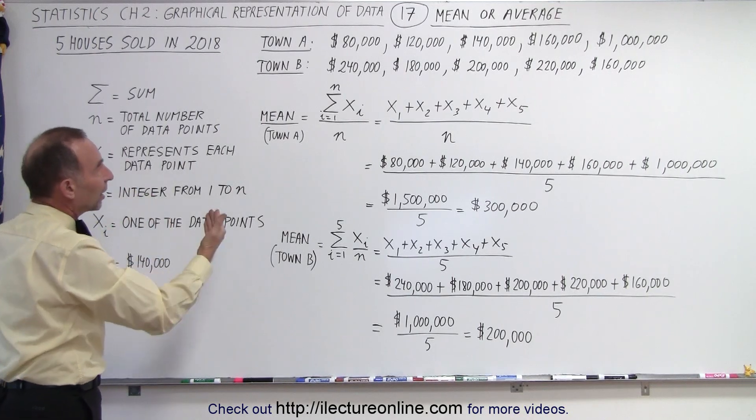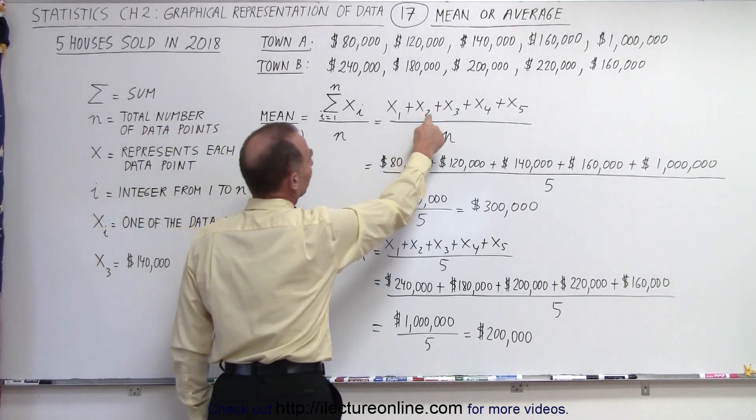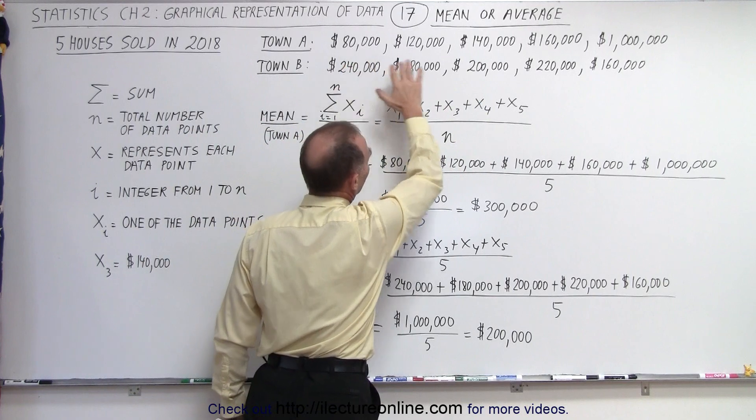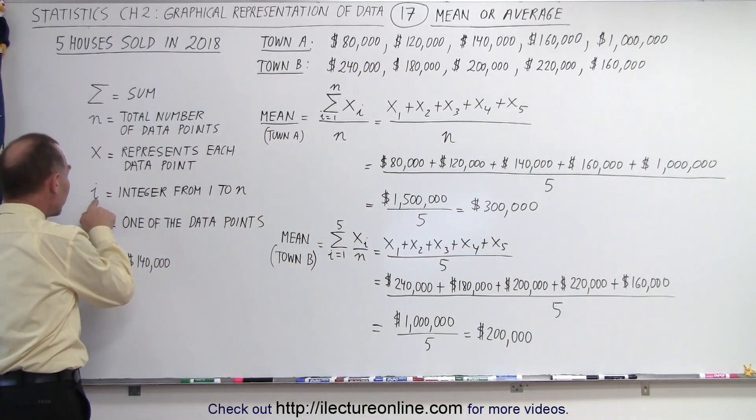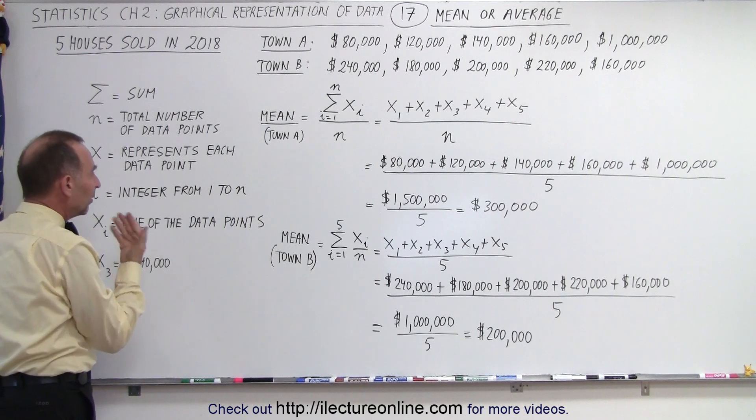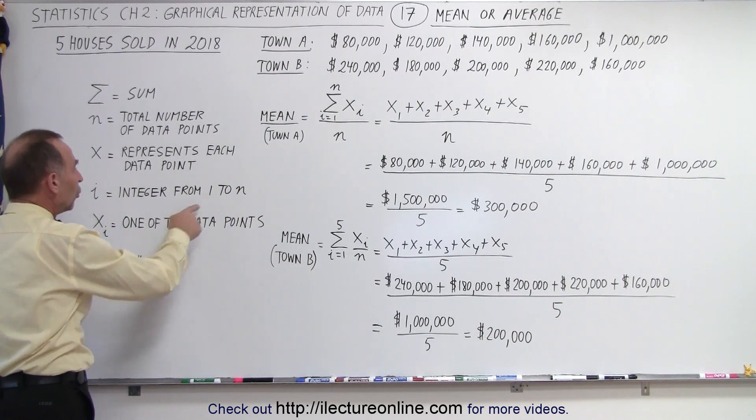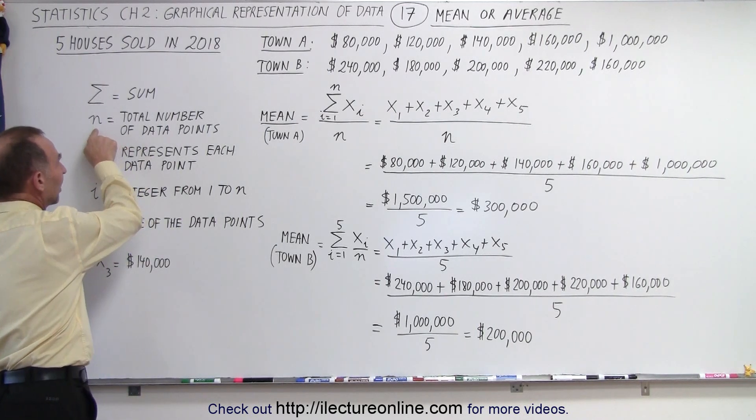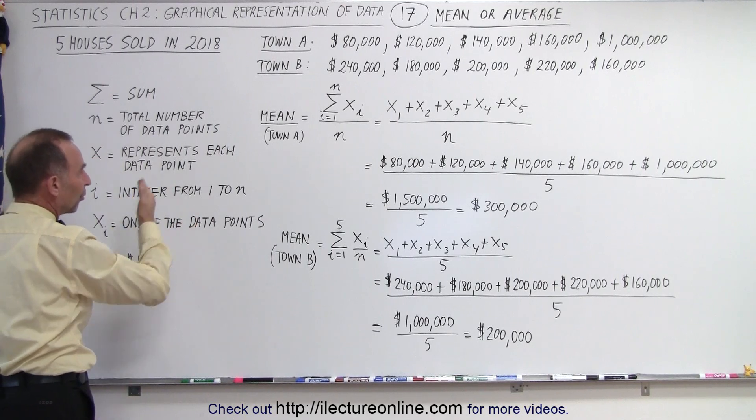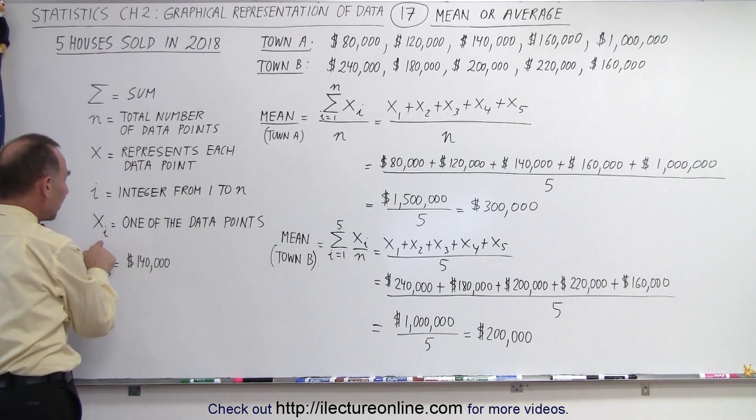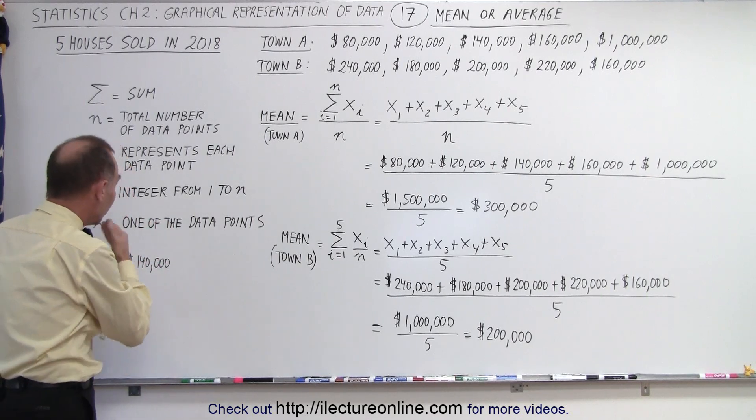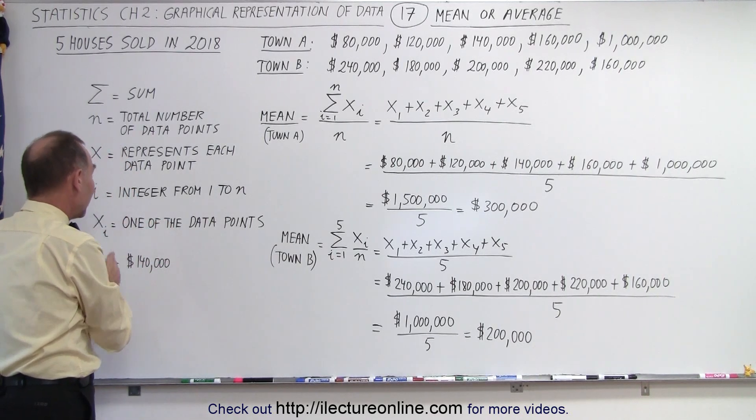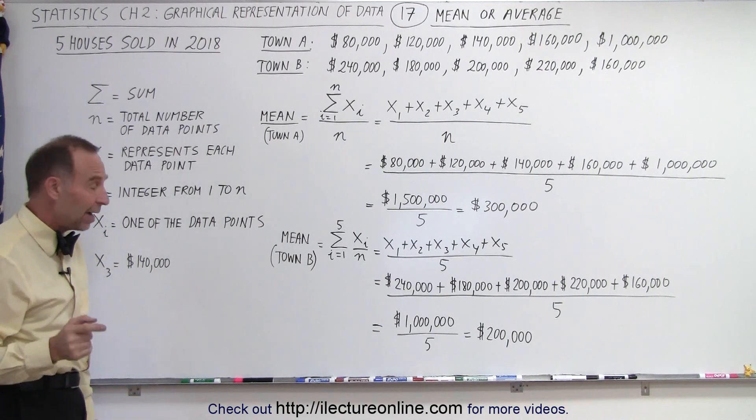X represents each data point. So we have X₁, X₂, X₃, X₄, X₅ representing the five data points, the five house prices. The subscript i is an integer that goes from one to the total number of data points, in this case N which would be five. So we go from one to five, and X sub i represents each one of the data points. X sub i represents a particular data point depending upon the value for i.